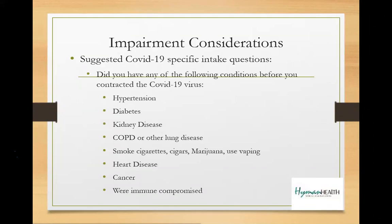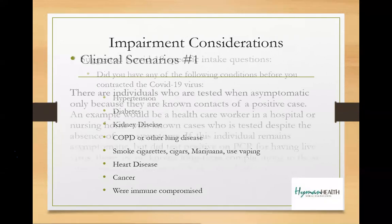Also, look at the past medical history — did they have any conditions before contracting COVID-19? That's not to say it's not work-related, but it may explain why they're more susceptible or have a more severe outcome. You can look at scenarios to understand whether the presumption applies.